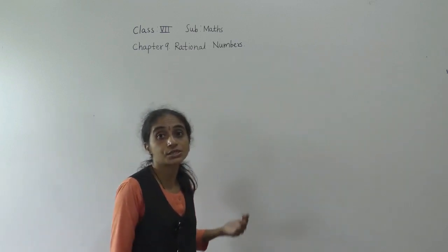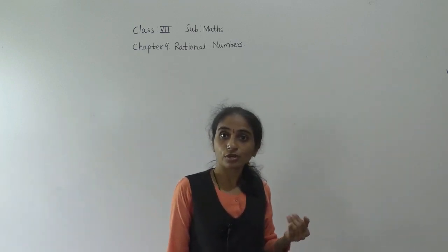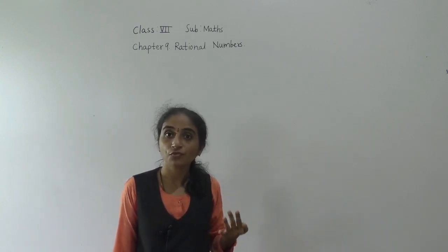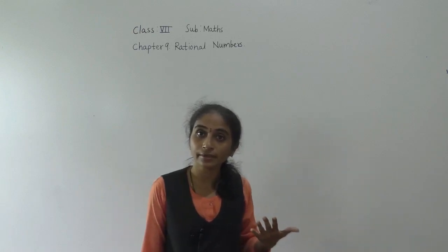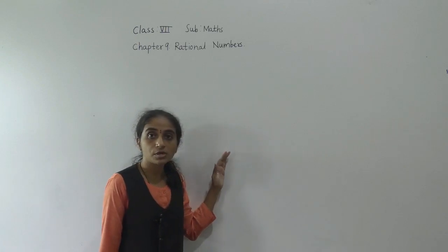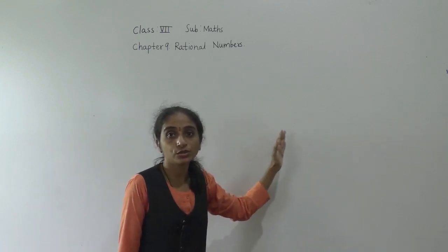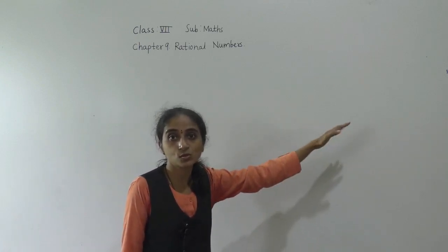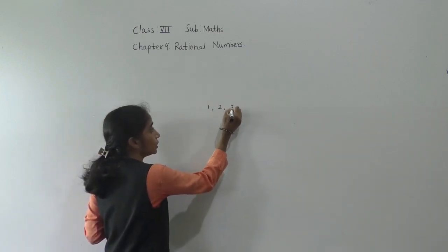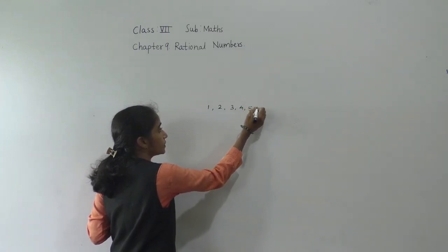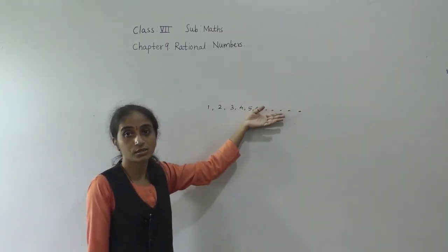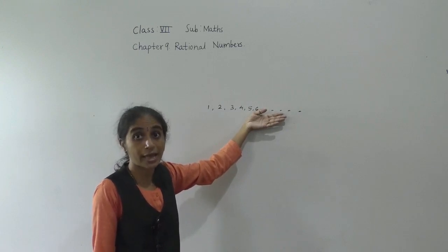So now what is a rational number? For that you should know the natural numbers, whole numbers, integers, fractions, and decimals. The numbers 1, 2, 3, 4, 5 and so on — these are the counting numbers, and we also call them natural numbers.